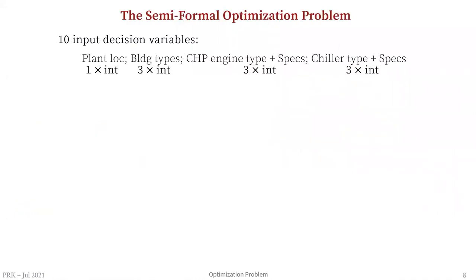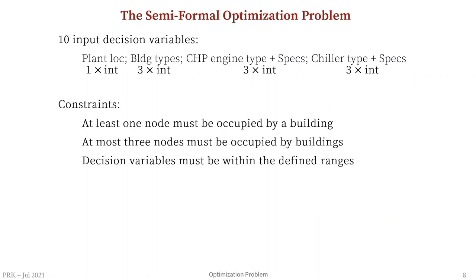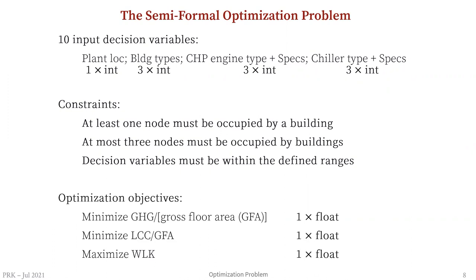The inputs modeled with CGAN are 10 input decision variables: the plant location, the three building types, three variables related to the CHP engine type and its specifications, and the same for the chiller type. Constraints require at least one node occupied by a building, at most three nodes occupied by buildings since one node is needed for the central plant, and all decision variables must be within defined ranges.